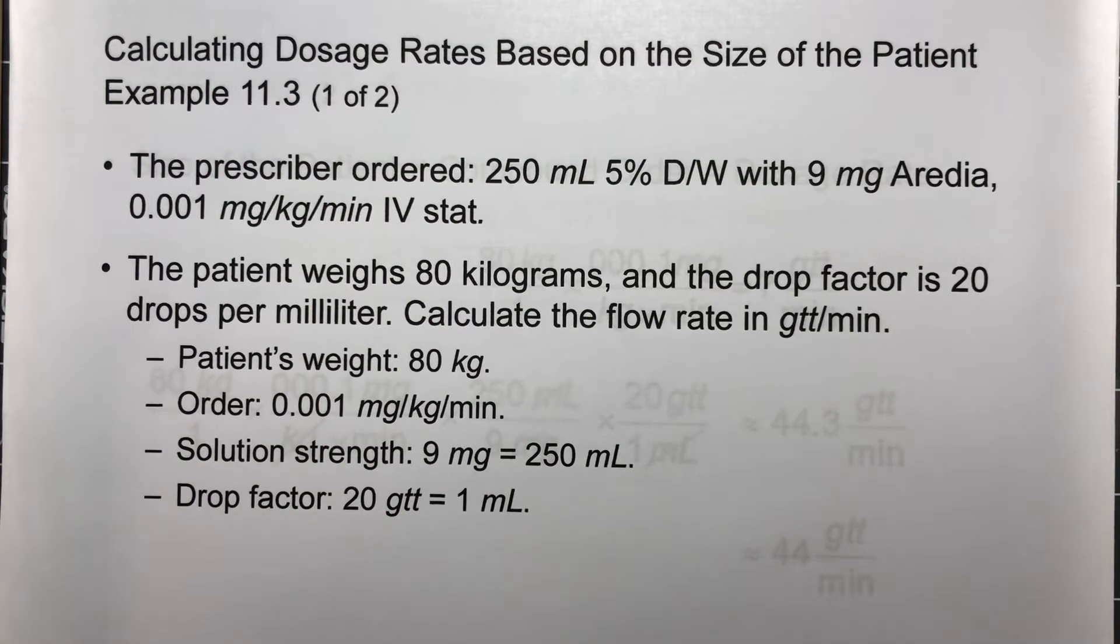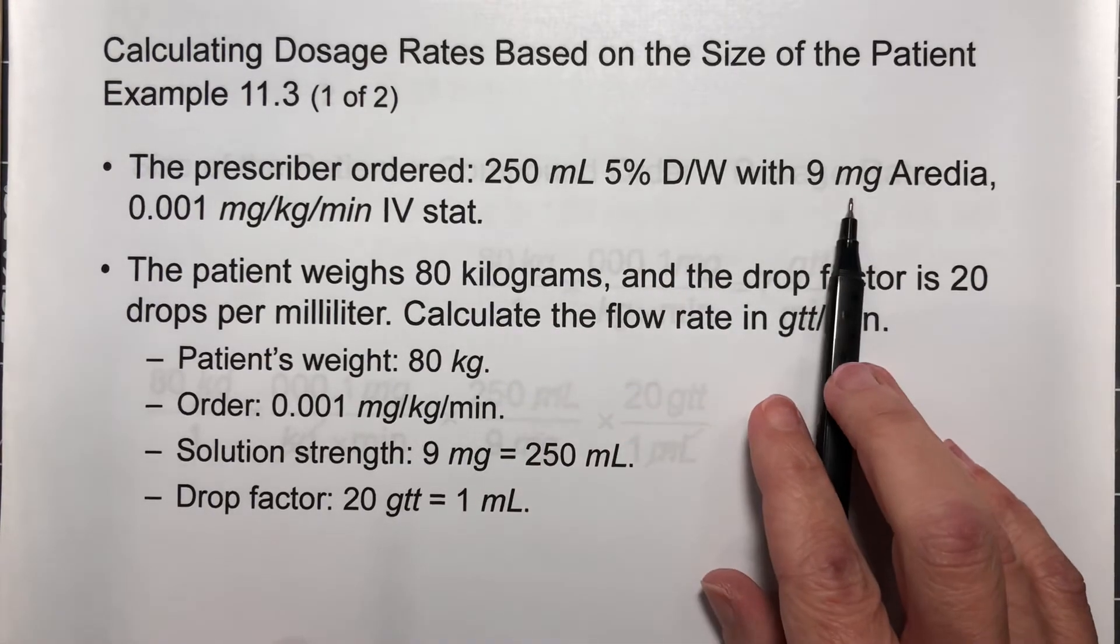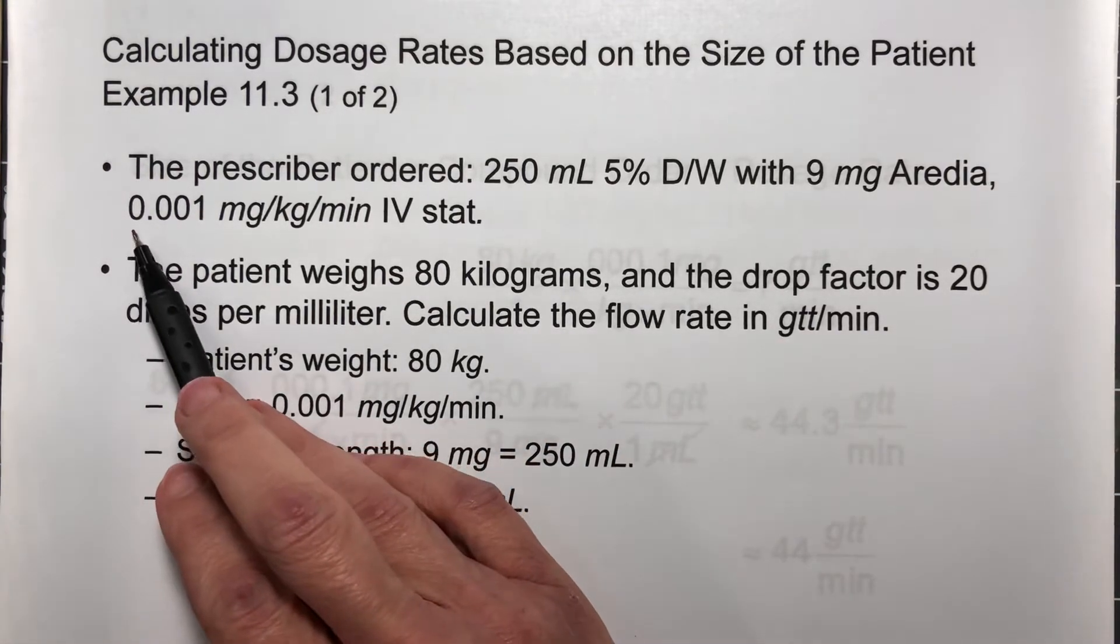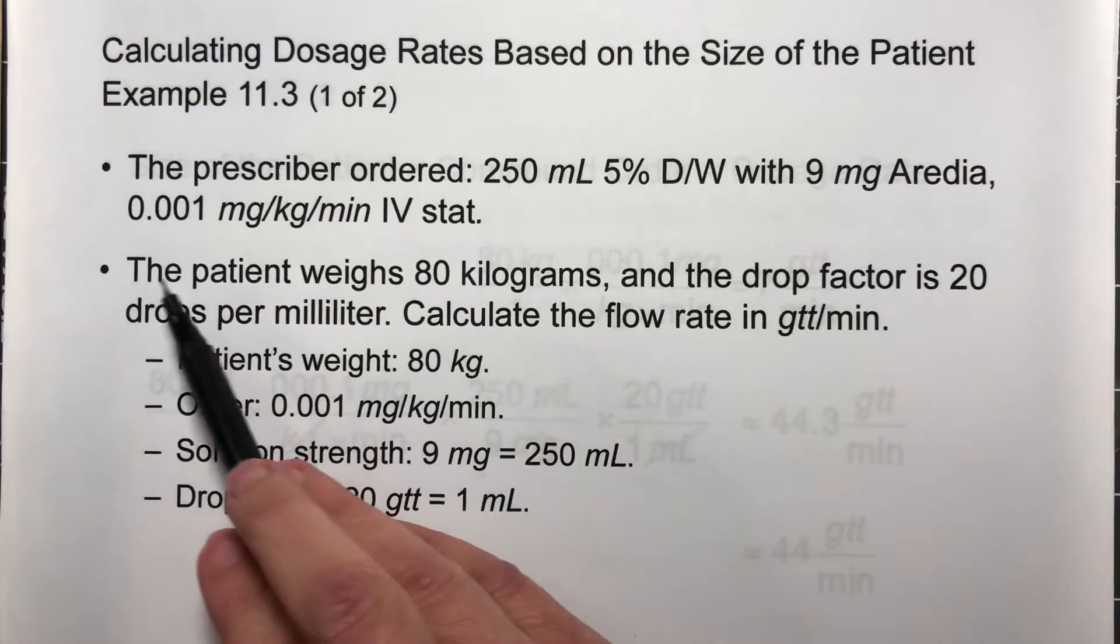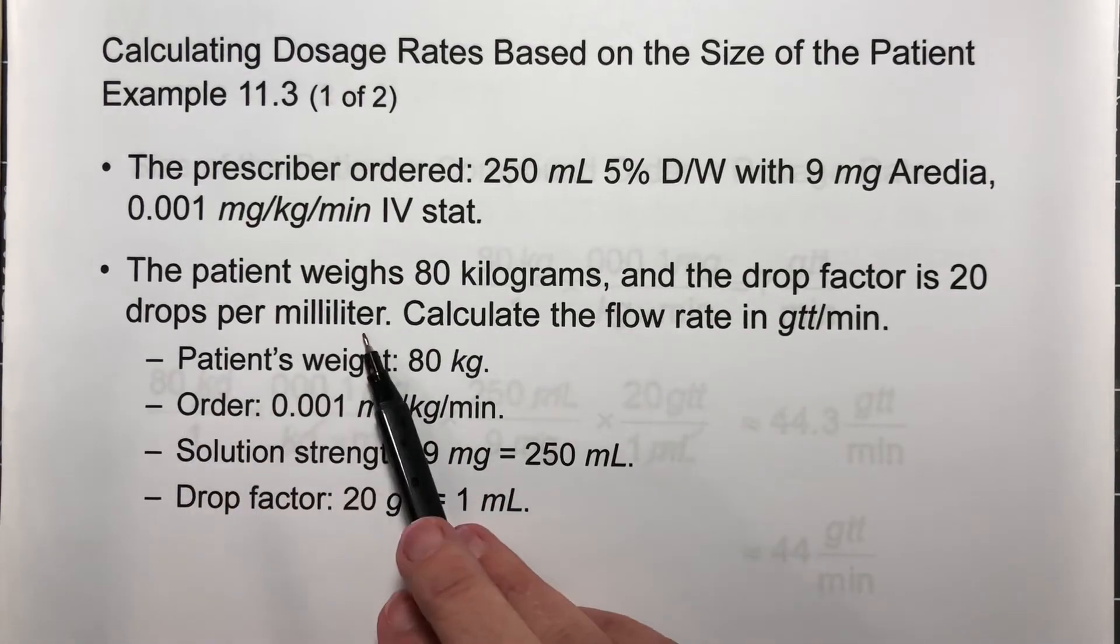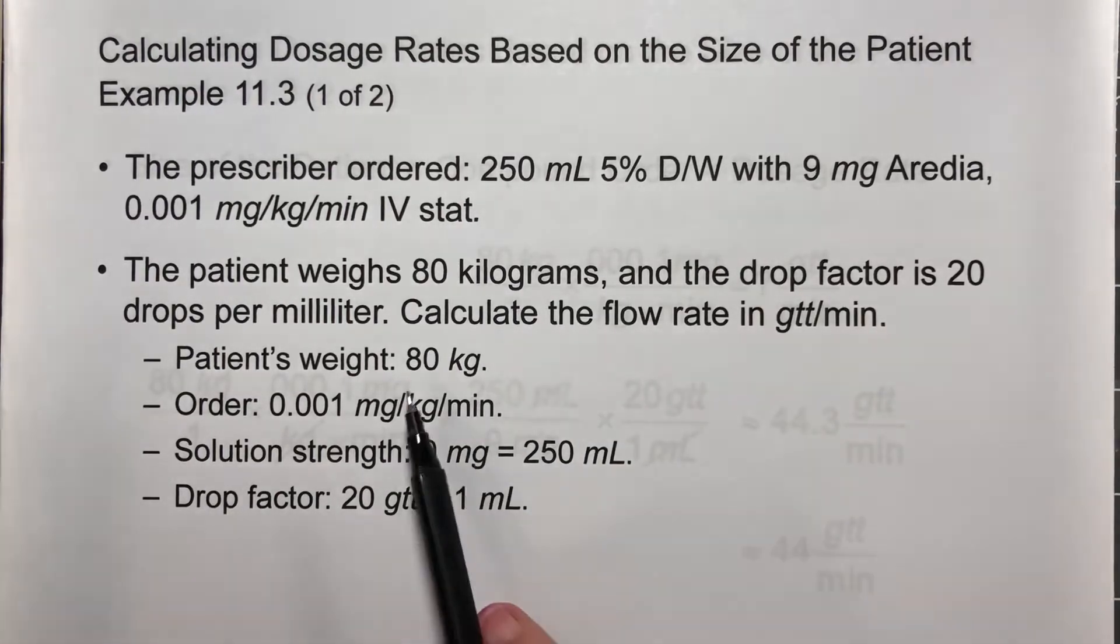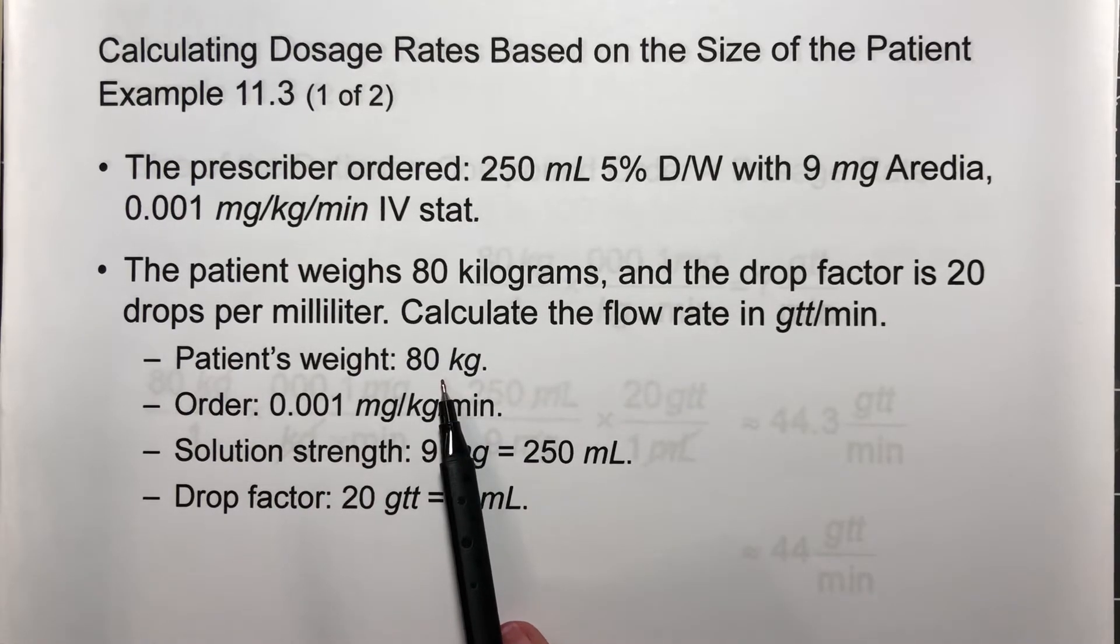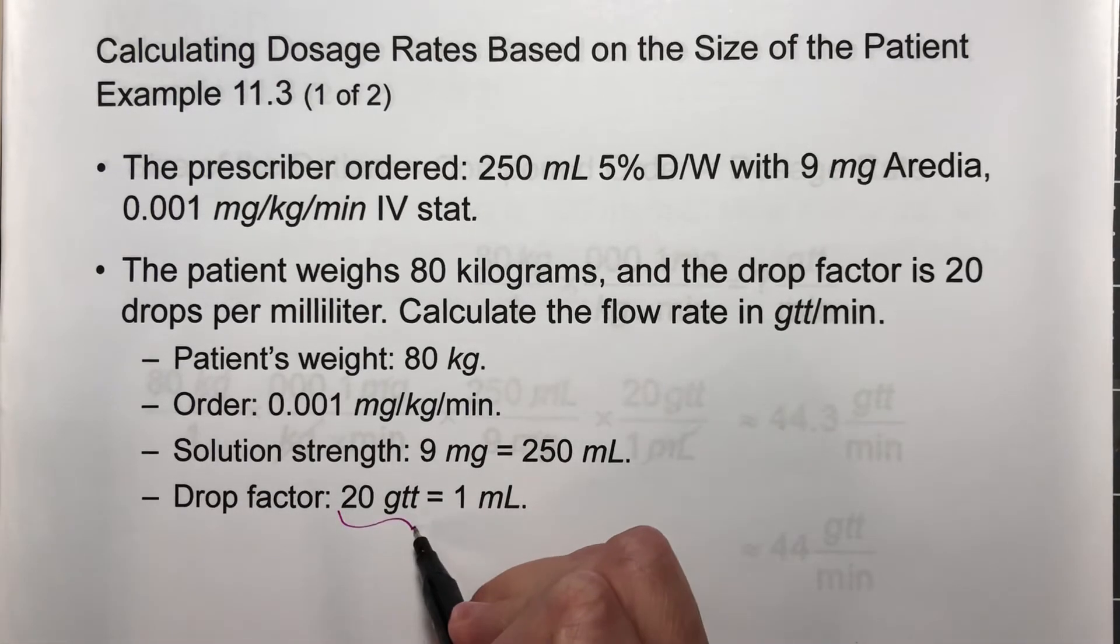The prescriber ordered 250 milliliters of 5% D/W with 9 milligrams of Aredia at 0.001 milligrams per kilogram per minute by IV stat. The patient weighs 80 kilograms, and the drop factor is 20 drops per milliliter. Calculate the flow rate in drops per minute. They give you some of this information here: 80 kilograms is the patient's weight, this is the order, the solution strength is 9 milligrams per 250 milliliters, and the drop factor is 20 GTT to 1 milliliter.